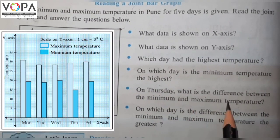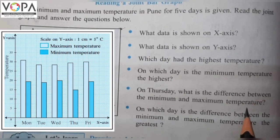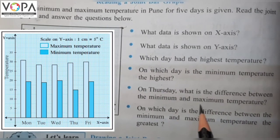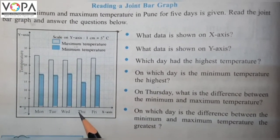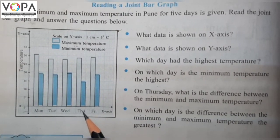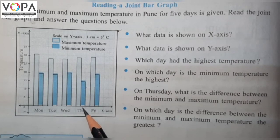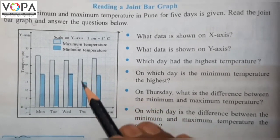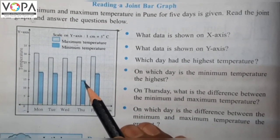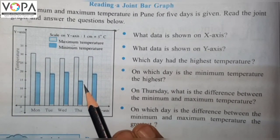On Thursday, what is the difference between the minimum and maximum temperature? Now we go to Thursday and look here. The maximum temperature is 29 degrees Celsius and the minimum temperature is 15 degrees Celsius. Therefore, the difference is equal to 29 minus 15, which is equal to 14 degrees Celsius.